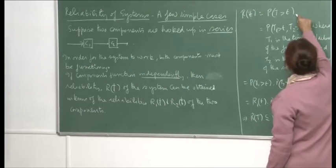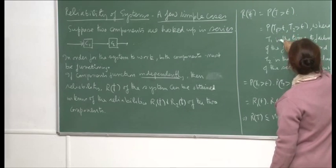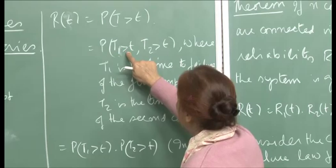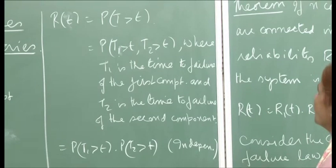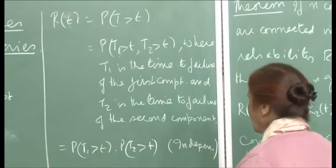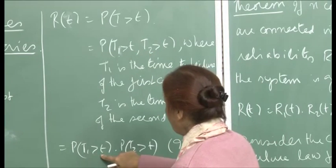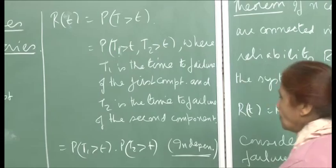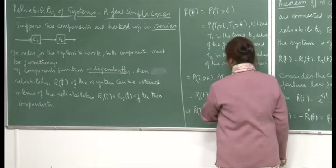We are asking for the probability that the lifetime T is greater than t. This means t1, the lifetime of the first component, must exceed t, and t2, the lifetime of the second component, must also exceed t — both must be functioning up to time t. Because of independence, this joint probability can be written as P(T1 > t) × P(T2 > t), which is r1(t) × r2(t).